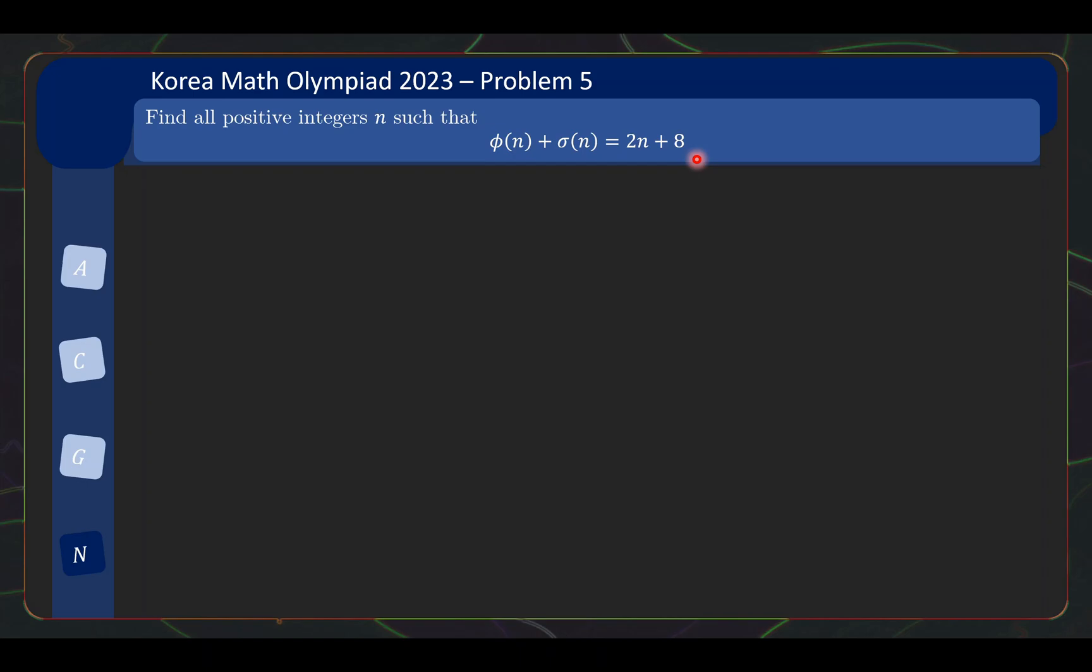When we are faced with a problem like this, what is the first natural thing to do? Naturally you'll want to recall what is the definition of φ(n) and σ(n). Typically for this type of problem, it's very useful to suppose that n has the following form. So its prime factorization is p₁^α₁ ⋅⋅⋅ pᵣ^αᵣ. And what is φ(n)? φ(n) is the number of integers from 1 to n which are relatively prime to it. And the formula for this is given by the following.